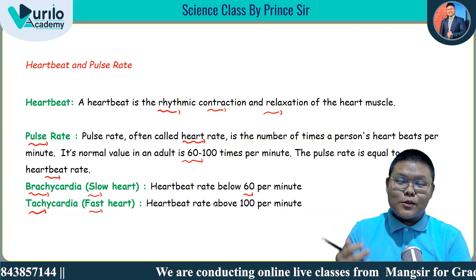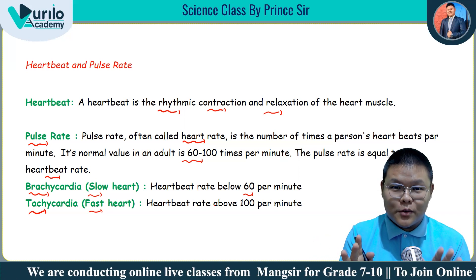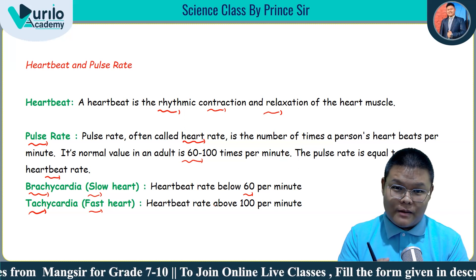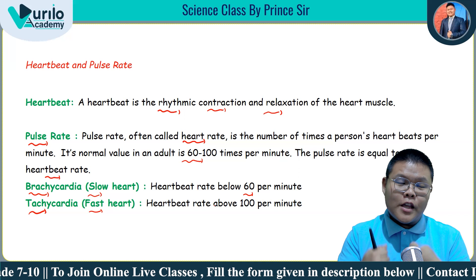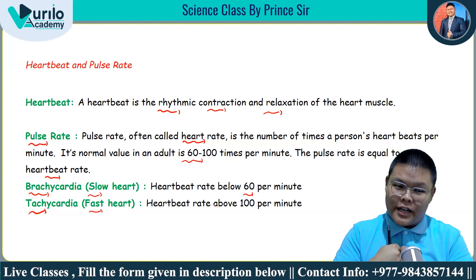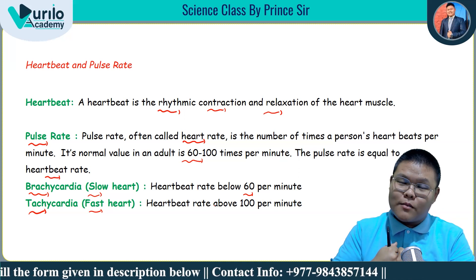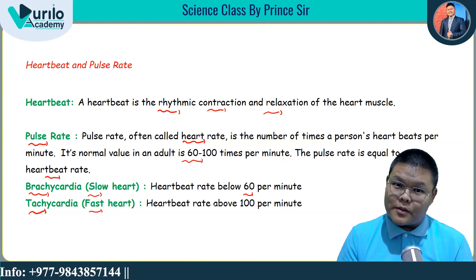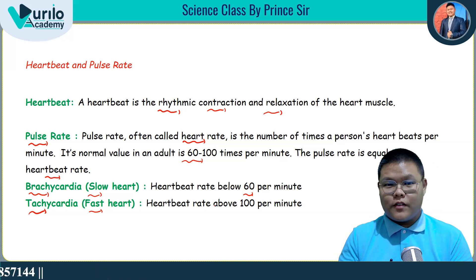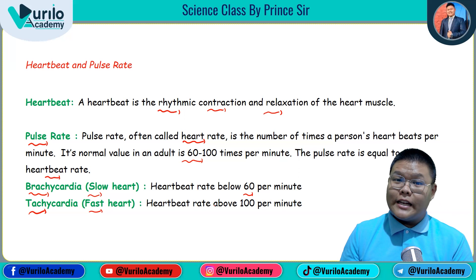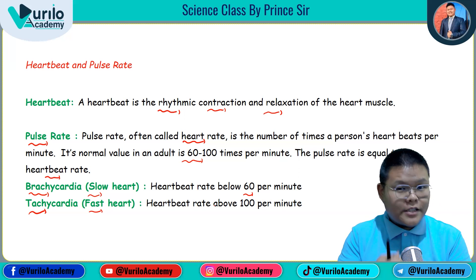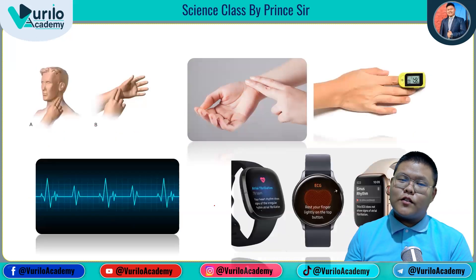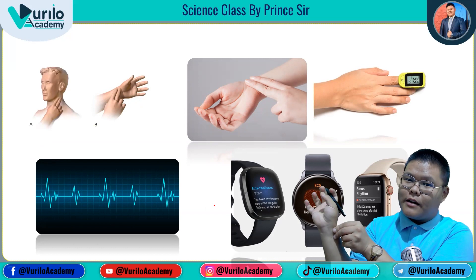Tachycardia is the condition where the pulse rate is high — above 100 per minute. This is associated with high blood pressure. The doctor measures pulse rate to assess this condition.